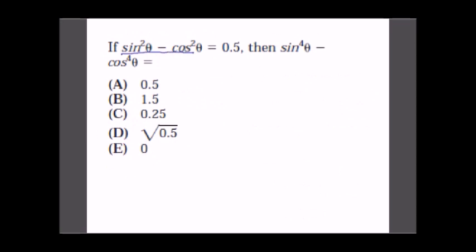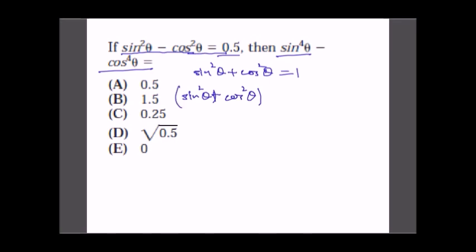The question is: if sin²θ − cos²θ = 0.5, find sin⁴θ − cos⁴θ. We know sin²θ + cos²θ = 1. Multiplying (sin²θ + cos²θ)(sin²θ − cos²θ) gives sin⁴θ − cos⁴θ = 1 × 0.5 = 0.5. So the answer is 0.5, which is option A.